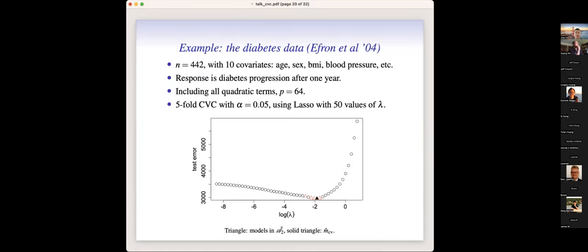Here is a quick example using the diabetes dataset, where we compare all linear terms and quadratic terms and show how the difference-based confidence set performs. It selects five models, and the black one in the middle covers the one output by ordinary cross-validation.